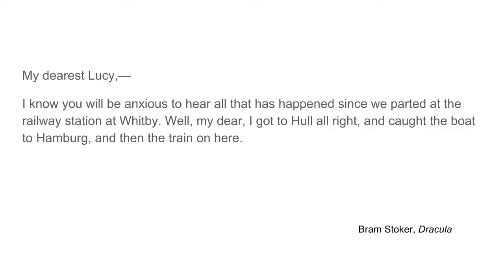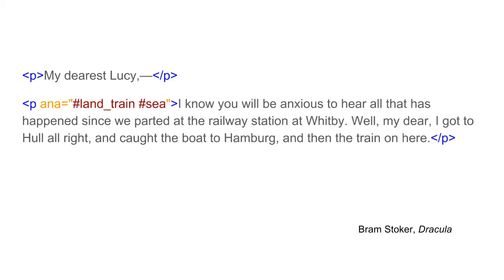Let's imagine a more literary type of text now. In this paragraph, we have two different types of travel occurring. I consider the paragraph as a whole and want to say that there are two different types of travel in it. So I could put the ANA attribute on the paragraph, and the value of this attribute would point to two different categories. You just need to separate them with a space, and that's all — you can point to as many categories as you need.